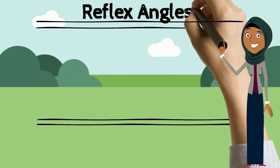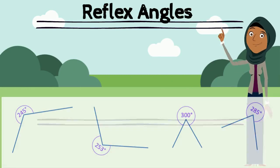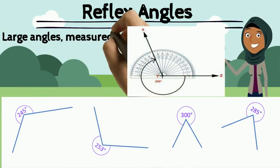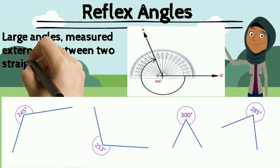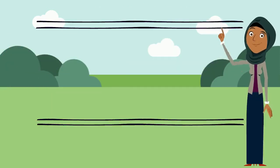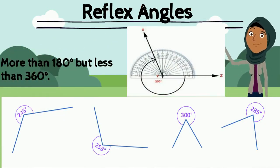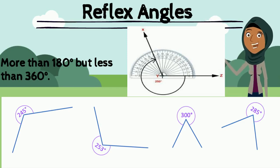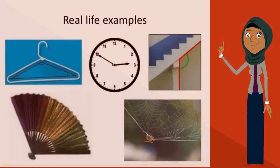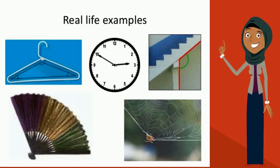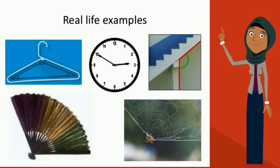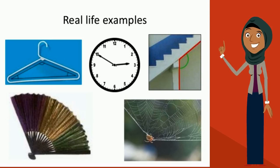Finally, the last type of angles we are learning about today are reflex angles. They are large angles and are measured externally between the two straight lines. Reflex angles are more than 180 degrees but less than 360 degrees. Here are some examples of things around us that have reflex angles — as you can see, they are more than 180 degrees but less than 360 degrees, and they are measured externally.